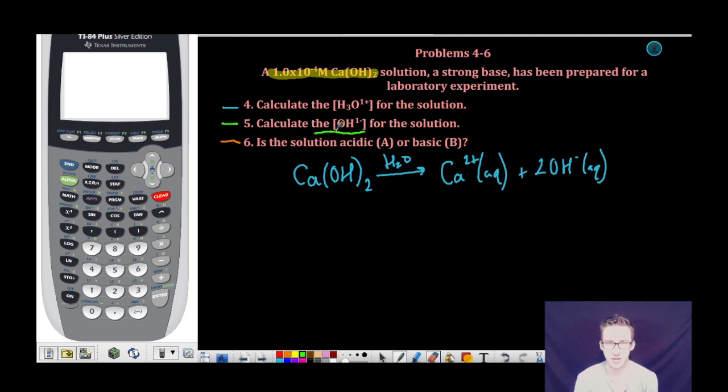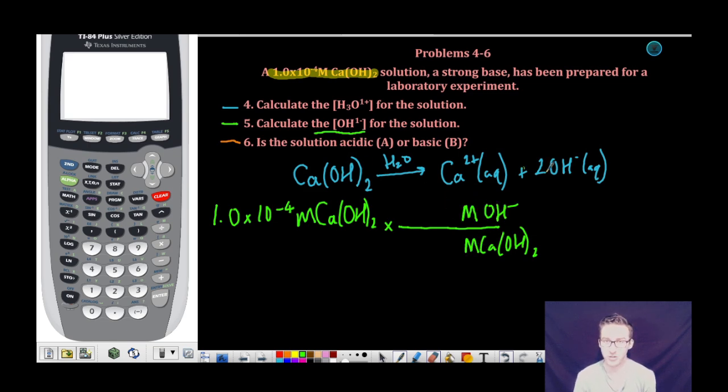So as I set up my dimensional analysis, I'm going to take 1.0 times 10 to the negative 4 molar, and I'm going to multiply that by a conversion factor that relates the concentration of calcium hydroxide to the concentration of hydroxide ions. Now I'm able to do this because the volume essentially is not changing here. And so essentially I can say that if I had a 1 molar concentration of calcium hydroxide, I would have a 2 molar concentration of hydroxide ions.